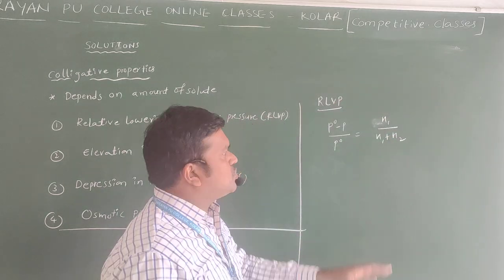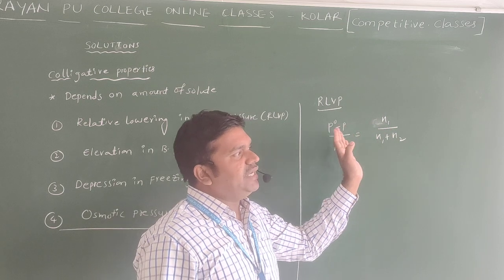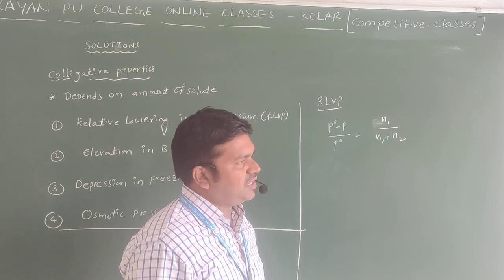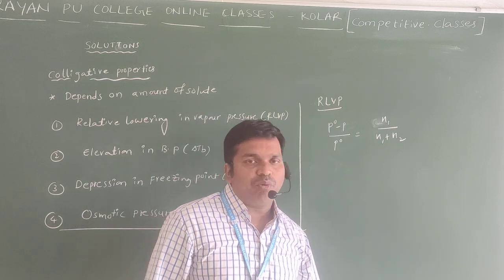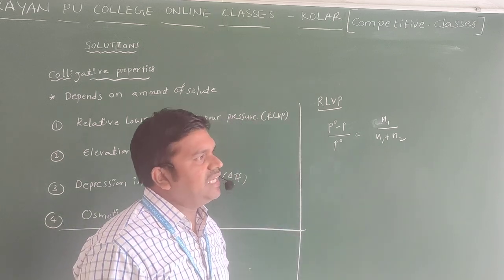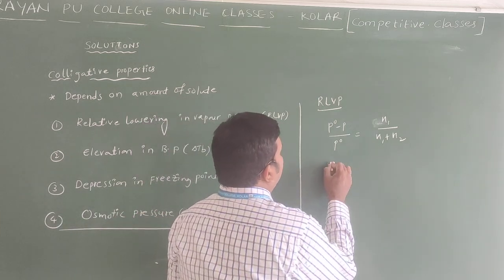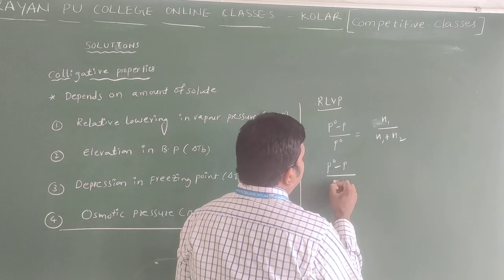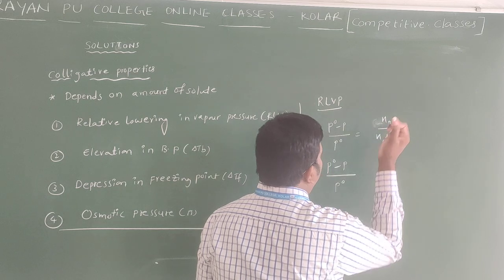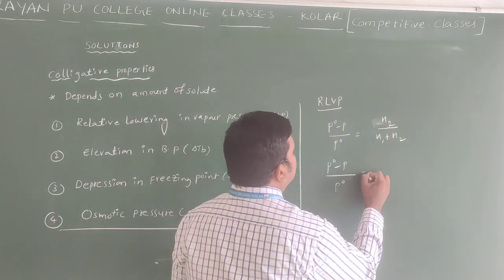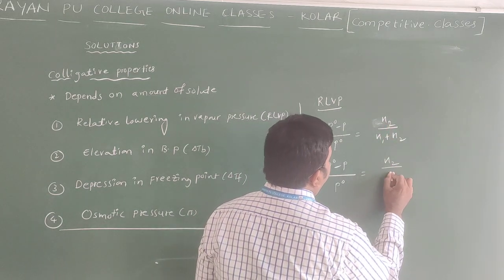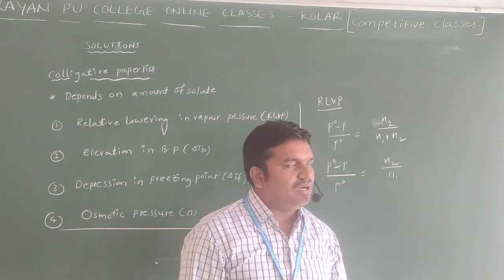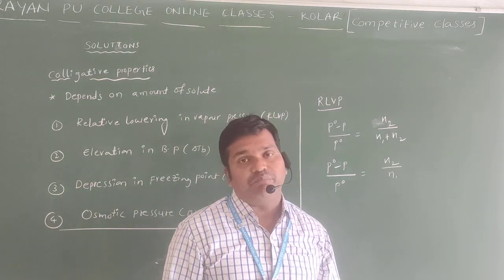P0 minus P by P0 equals N1 by N1 plus N2. The Colligative Property is mainly applicable for dilute solutions. For dilute solutions, the concentration of the solute is very much less compared to the solvent. So the formula becomes: P0 minus P by P0 equals N2 by N1 plus N2, which approximates to N2 by N1.